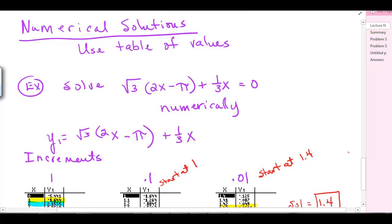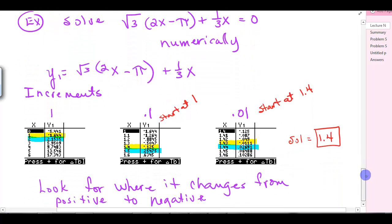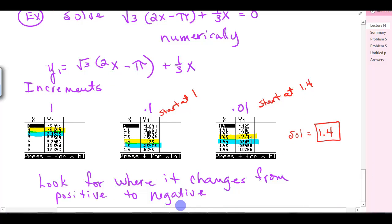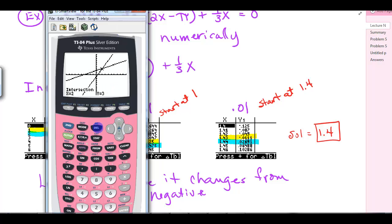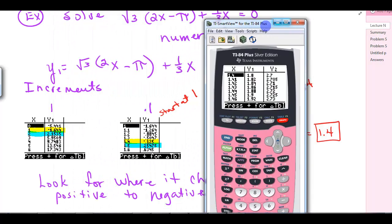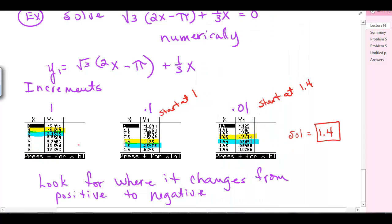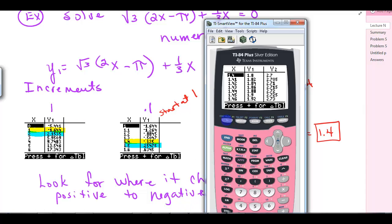Then numerical solutions, you're actually using a table of values for that. Solve square root of 3 times 2x minus pi plus 1 third x equals 0. That'd be kind of crazy to try to solve right now. But if we go to our y1 in our calculator and put that in just like it is, we're going to go to our table, second table. When you put that in, you want to start in increments of 1.